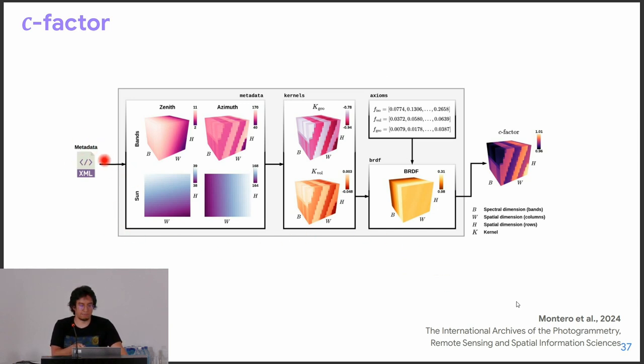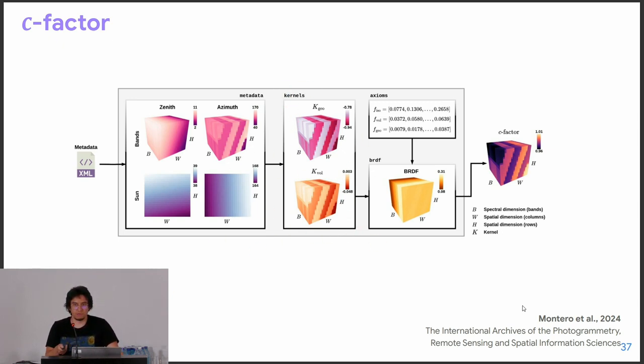Behind the scenes, the tool gets the metadata, extracts the zenith and azimuth view angles, and also the sun zenith and azimuth angles. From this, it computes the kernels — the geometric and volumetric kernels, since the isotropic one is uniform. Then, using the spectral parameters derived from the David P. Roy papers, it computes the BRDF model — in this case the Ross-Li BRDF model. The C-factor is then computed quickly using multidimensional arrays, and it's just a multiplication between the C-factor and the surface reflectance to get the Nadir BRDF adjusted reflectance for the whole data cube.